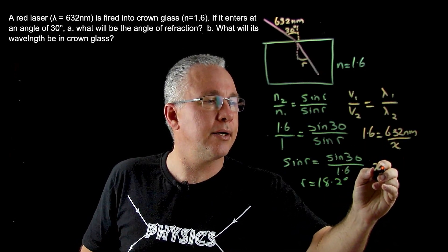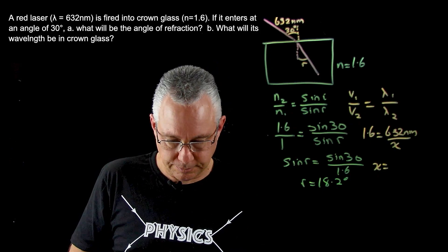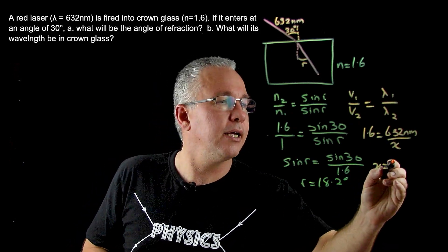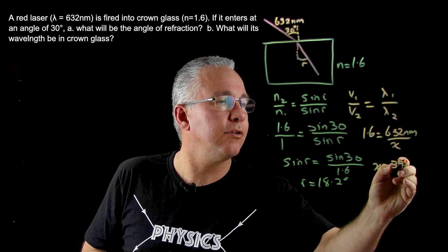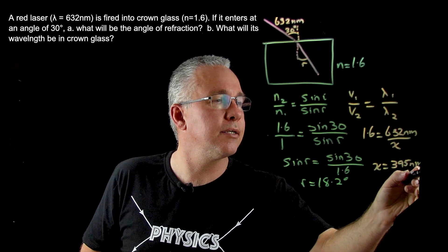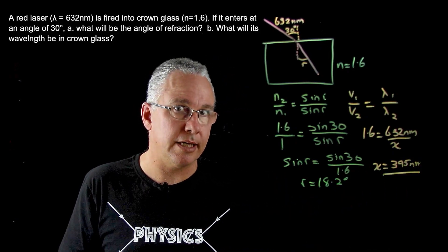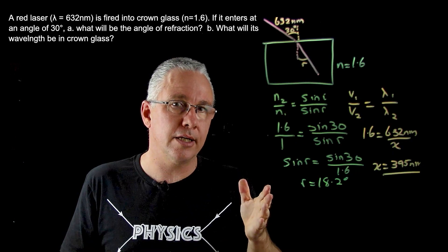And so you can see our unknown value becomes 395 nanometers. So there is the wavelength inside the crown glass.